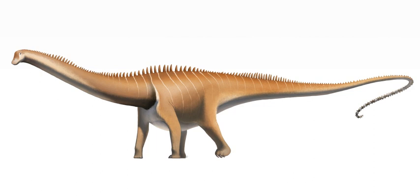Brachiopods suffered greatly and never regained their previous numbers or variety. Ammonoids lost all but one family. Eurypterids and trilobites became extinct. Blastoids became extinct. Crinoids lost all but one family. The echinoids just squeaked past — only one genus is known to have survived. Typical survivors were small detritivores and sediment feeders. The worst losses were among filter feeders and carnivores.